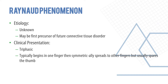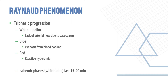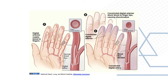The clinical presentation is said to be triphasic, usually beginning in one finger then systematically spreading to other fingers but usually sparing the thumb. The stages are: white (pallor from lack of arterial flow due to vasospasm), then blue (cyanosis from blood pooling), then red from reactive hyperemia. The ischemic white and blue phases last about 15 to 20 minutes.